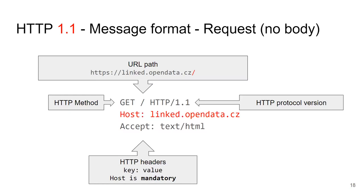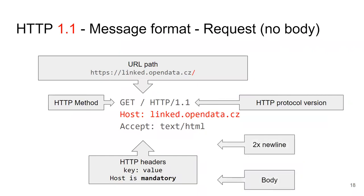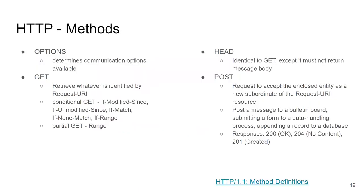In HTTP 1.1 we have the 'Host' header, which contains the domain name, enabling the server to actually see the requested domain name and provide the correct website. In HTTP 1.1 the host header is mandatory because this is such a common situation. Then, after the method, path, version, and headers, we have two new lines separating the header block from the body of the request. We can have a body in the request — we'll get to what can be in the body after we discuss the different HTTP methods.